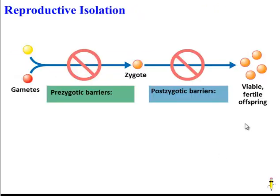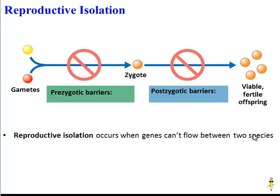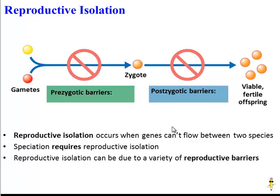In order for this to occur, reproductive isolation must happen. Those small-scale changes have to add up to reproductive isolation, which occurs when genes can't flow between two different species because the species can't mate with each other. There are a couple ways this can happen — two general categories, but many barriers can prevent species from reproducing with each other.